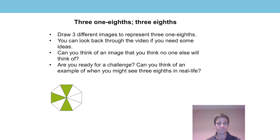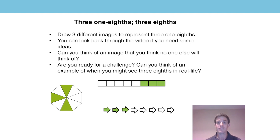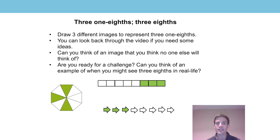So I'm going to show you my three models that I came up with. There's my first one, there's my next one, and there's my final model. Now, how many equal parts should your whole have been split into? That's right — there should be eight equal parts in the whole. And if we were looking for three one-eighths, how many parts should have been shaded? That's right, it was three parts. Well done on completing that challenge.